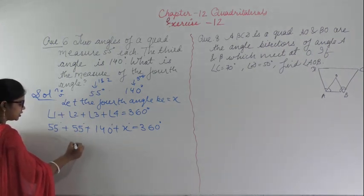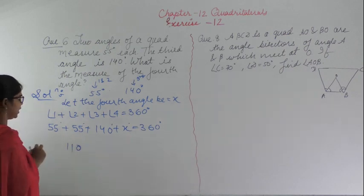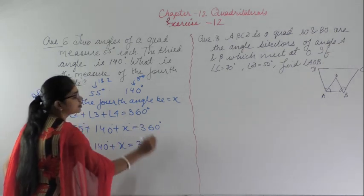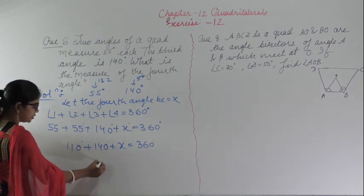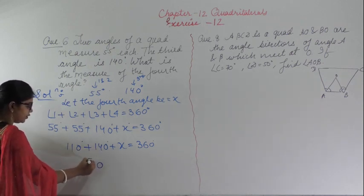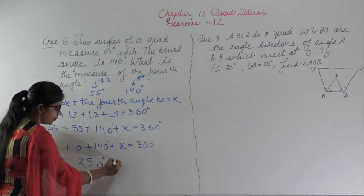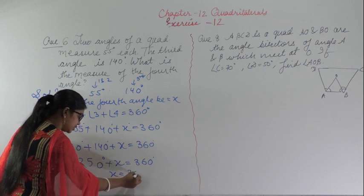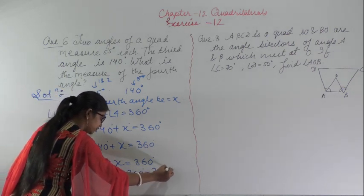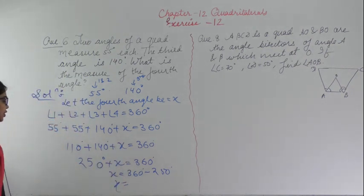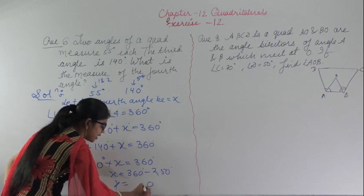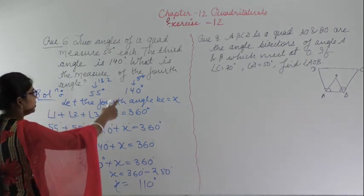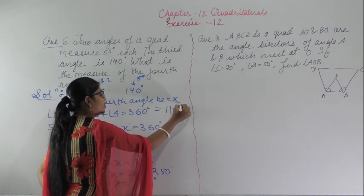Adding: 55 plus 55 gives 110 degrees. So 110 plus 140 gives 250 degrees plus x equals 360 degrees. Therefore x equals 360 minus 250, which gives 110 degrees. The measure of the fourth angle is 110 degrees.